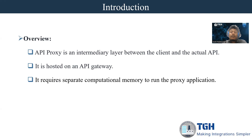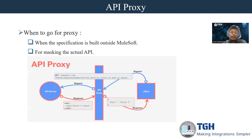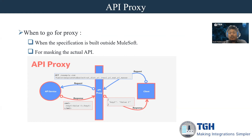So when can we go for an API proxy? Whenever any specification on an API is built outside MuleSoft and we want to expose it from MuleSoft, then we can make use of API proxy. And whenever we want to mask the actual API, we can also use API proxy.